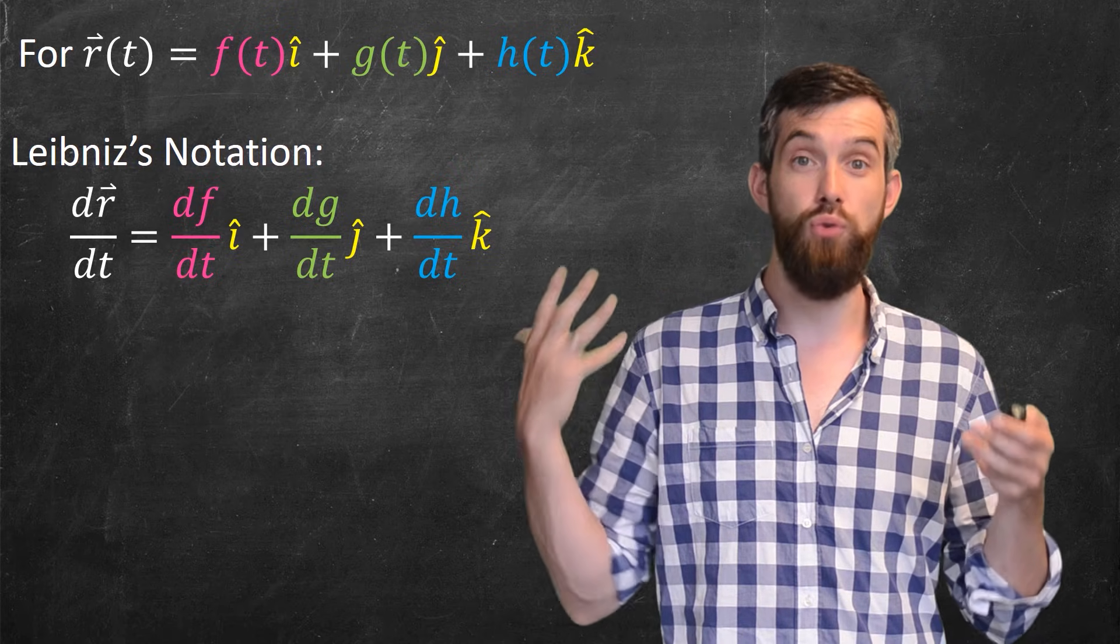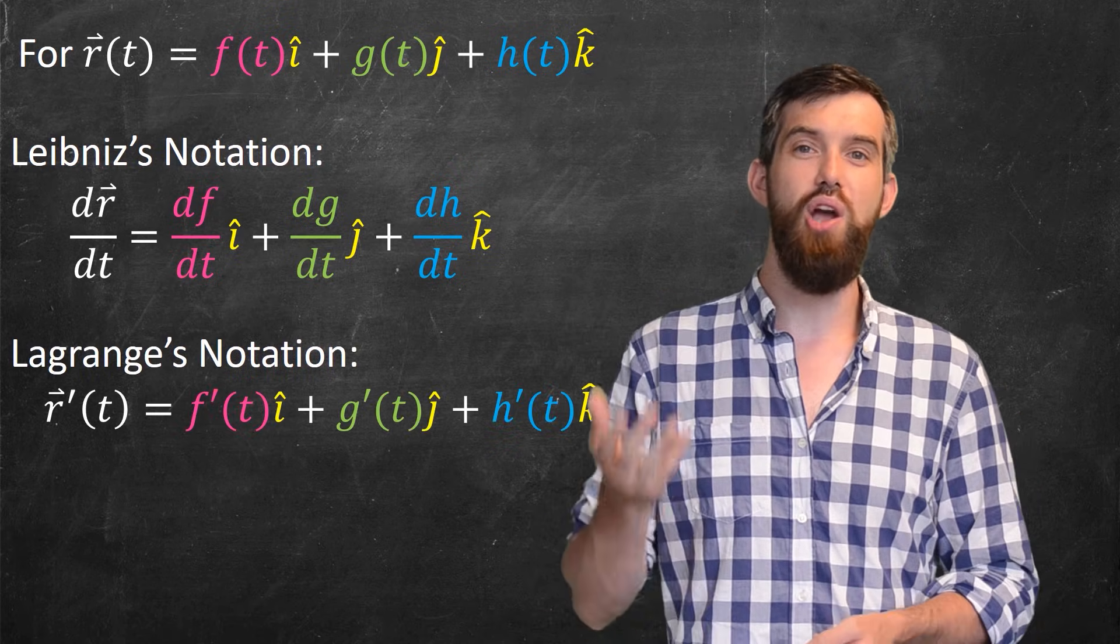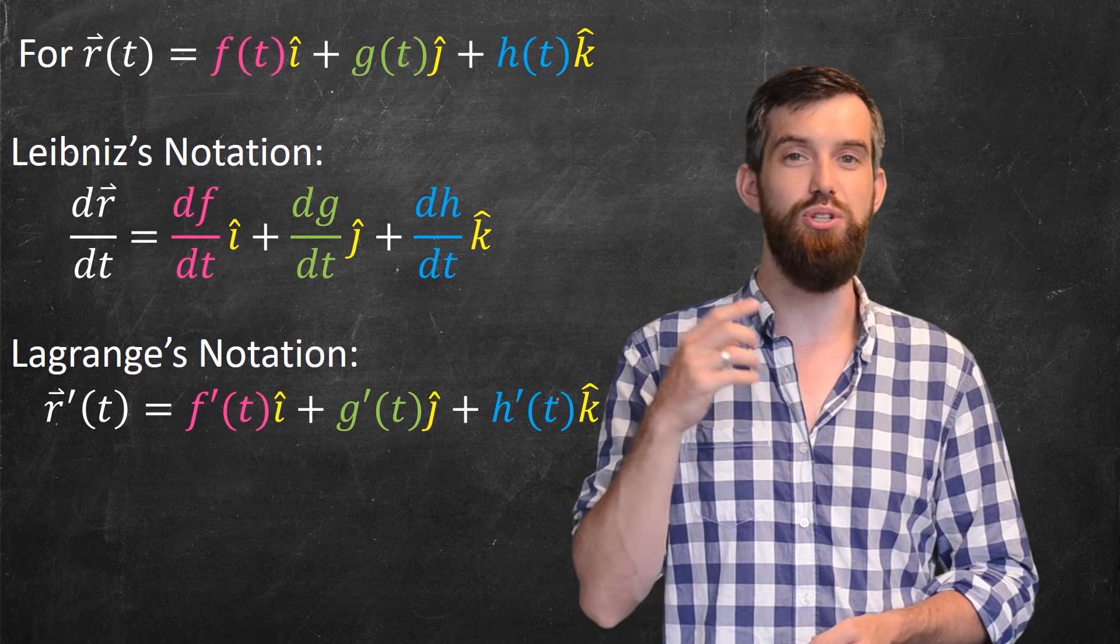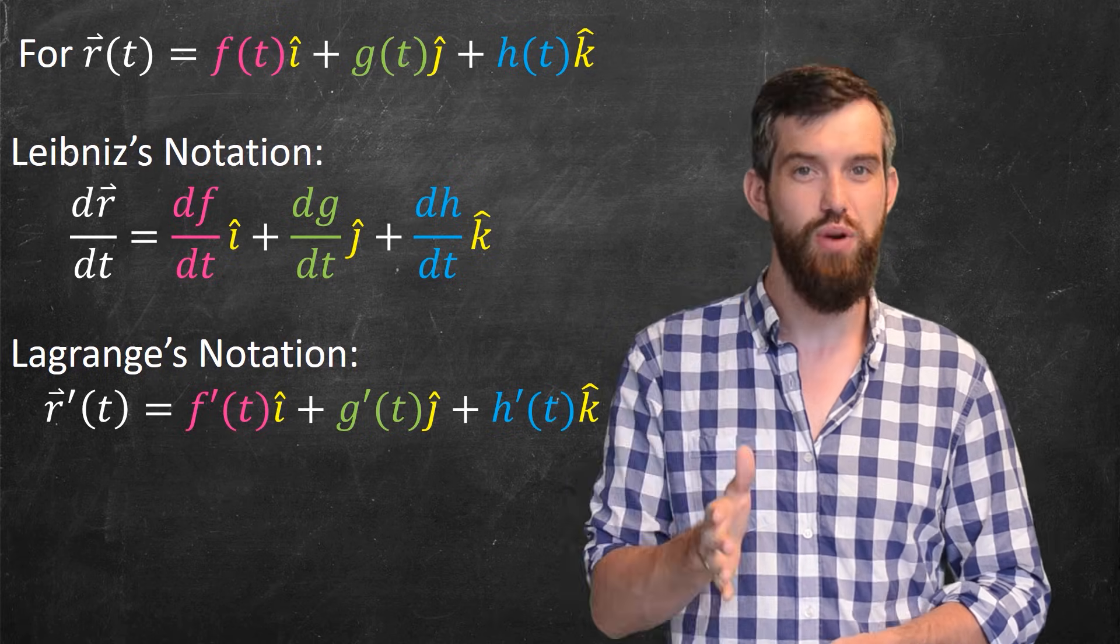However, if you prefer to use Lagrange's notation, that's the one with primes, you can do that just as well. And then you'd say r prime of t is going to be equal to f prime of t in the i-hat, g prime of t in the j-hat, and h prime of t in the k-hat.